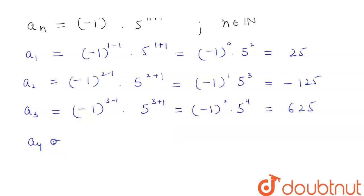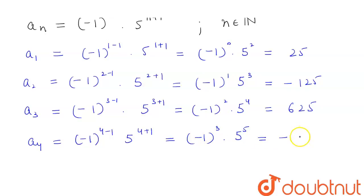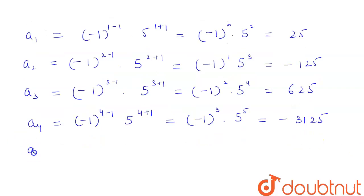a4 will be equal to (-1)^(4-1) × 5^(4+1), that is equal to (-1)^3 × 5^5. An odd power of -1 will be negative, so this will be -3125.